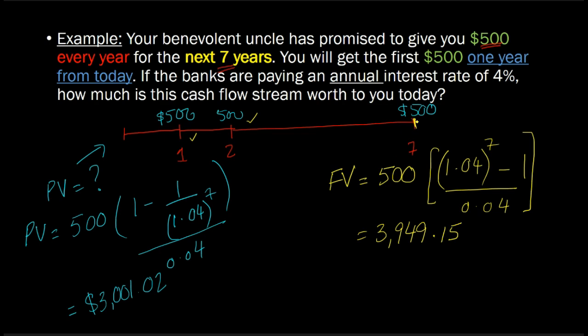Why is this calculation interesting? Because remember, we said that your uncle giving you $500 every year for seven years was as if he was giving you $3,001 today.